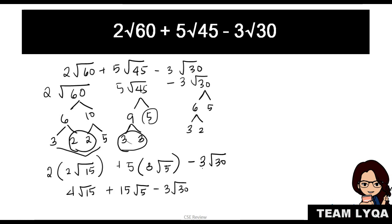And then that's it. That's what you do. You can't do anything more because they're all at the end of their factors. So you can just arrange it. You can start with negative 3 square root of 30 plus 4 square root of 15 plus 15 square root of 5. And then you have your answer.